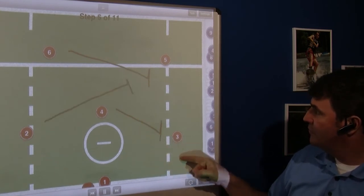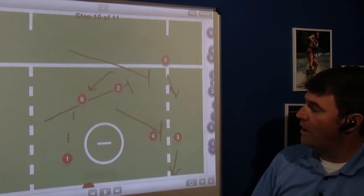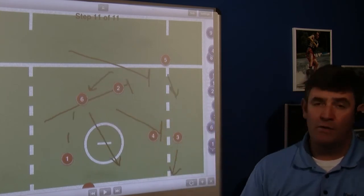Here it goes again. Number three and number five are simply going to try and draw their defenders away from where the play is going to happen. It's a great way to get a shot off.